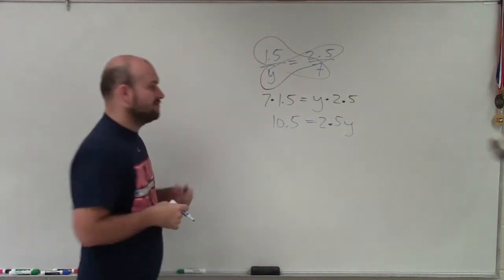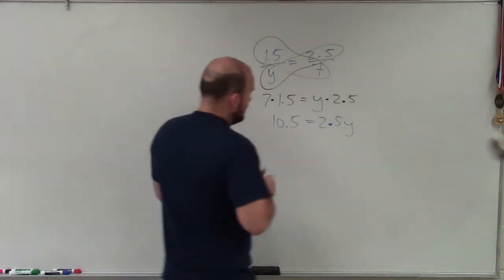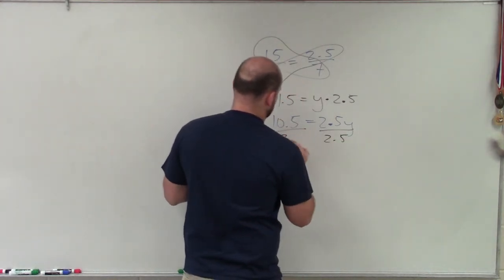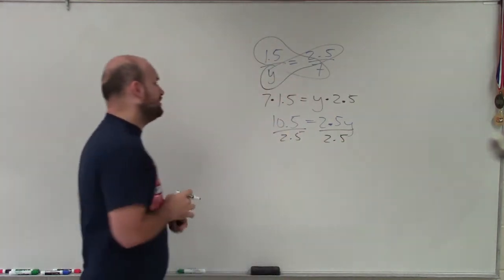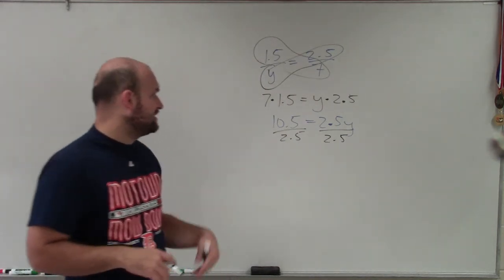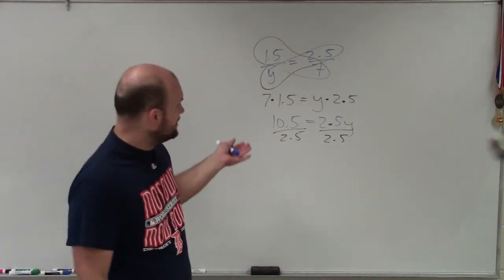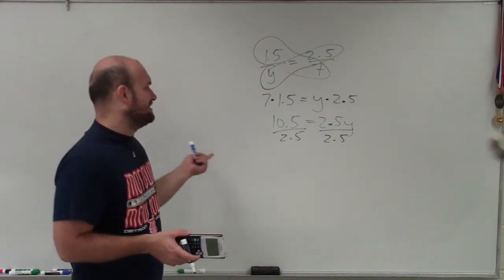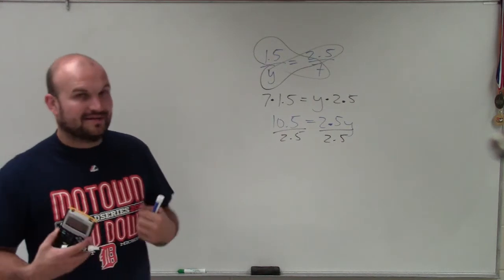I like to write the 2.5 in front. So now, to solve for y, I'll just divide by 2.5. We know that 2.5 multiplied by 2 gives us 5. So I know it at least goes in there 1, 2, 3, 4 times. But then how many times does 2.5 divide into 0.5?